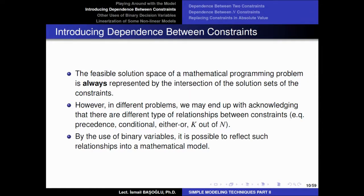These kinds of situations will create some relationships between the constraints. For example, you can say that we have two constraints and either one of them should be satisfied — you can also satisfy both of them — but at least one of them should be satisfied. In the optimum solution, you need to satisfy at least one of them. We are going to see such an application in the precedence constraints.